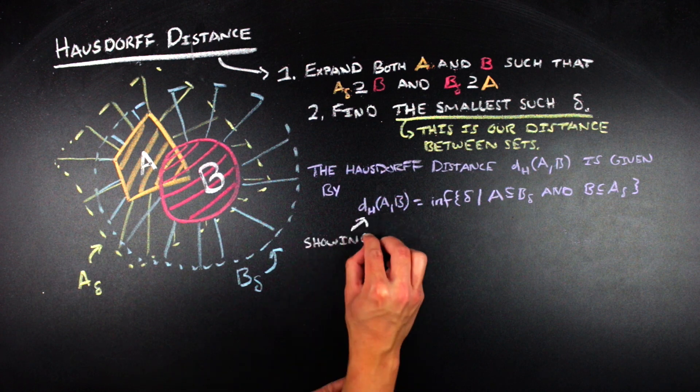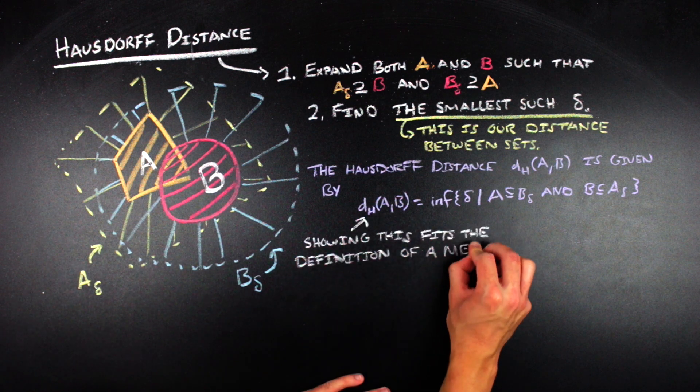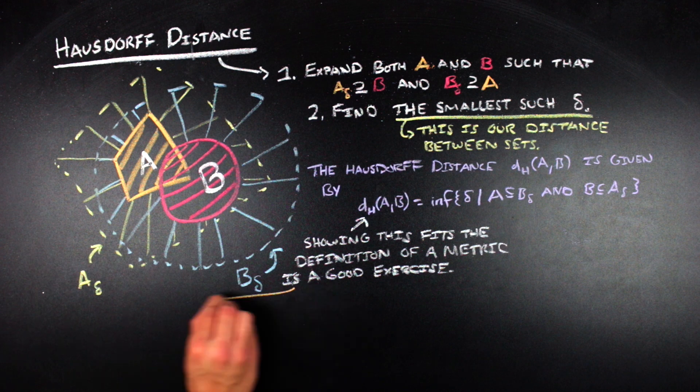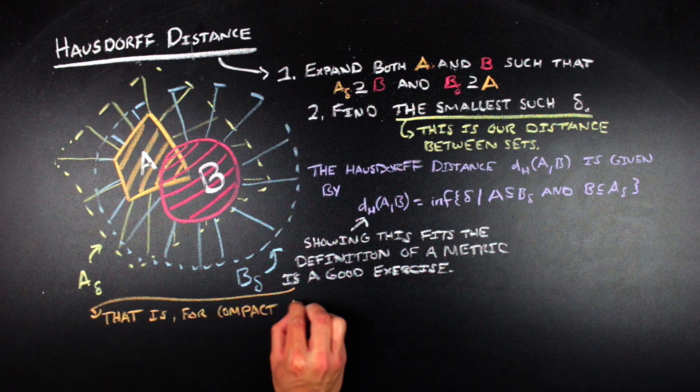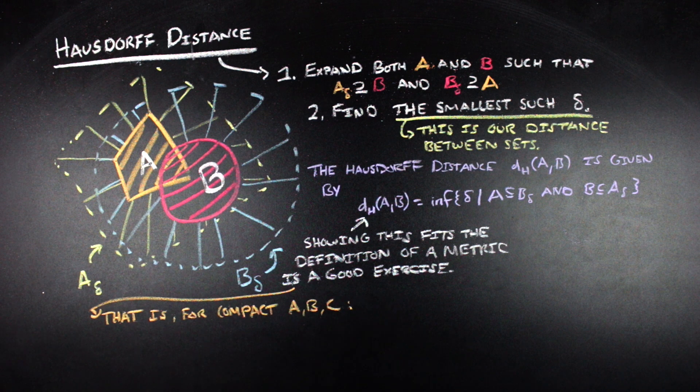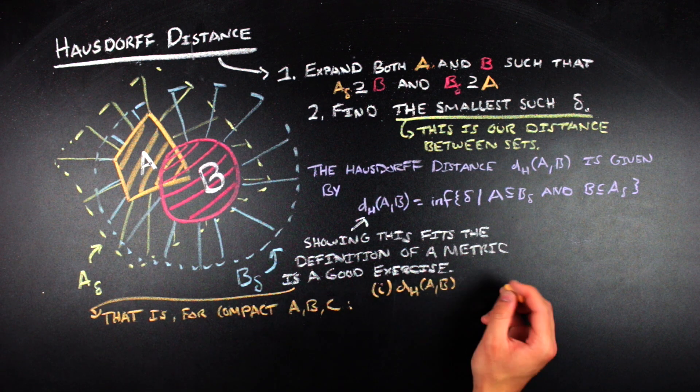Showing that Hausdorff distance fits the properties of a metric when working with compact sets is actually a pretty good exercise, and I think it's pretty fun because there's some weirdness that happens with the triangle inequality, but the first three properties are actually pretty intuitive. So, first off, the distance is always going to be greater than zero for any two sets of points because we're never contracting a set. We're always expanding it to contain the other, and the same with the other set that's considered in the distance.